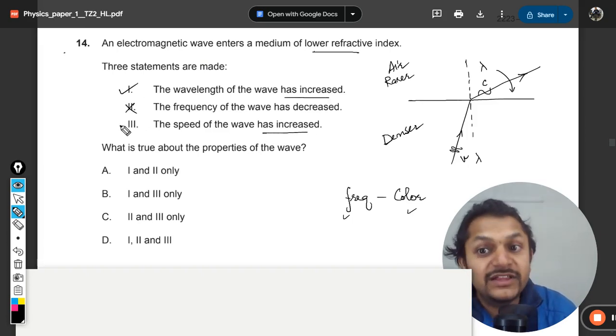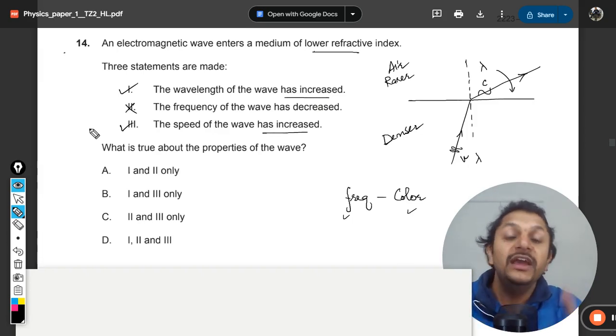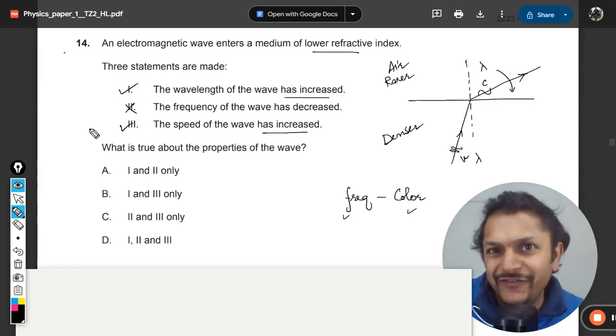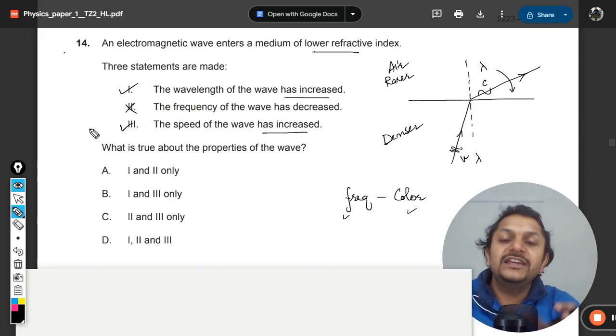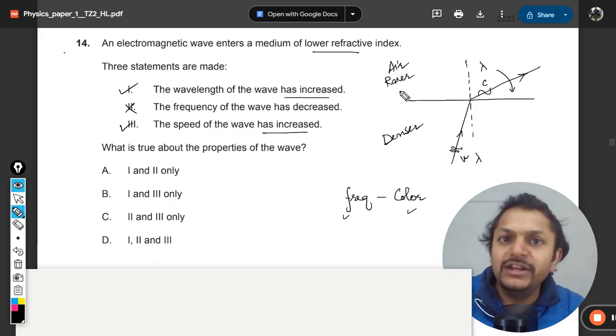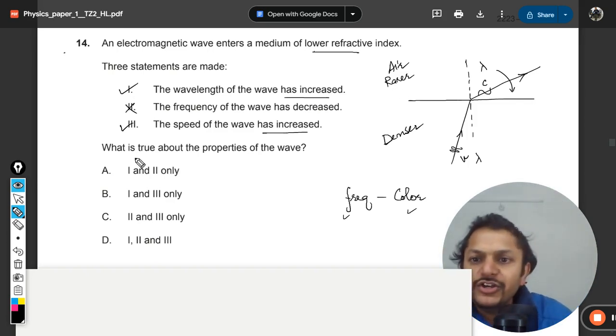The speed has increased. Even that is correct, because that is what is the definition of refractive index. Refractive index is the ratio of the speed of light in air divided by the speed of light in the medium.